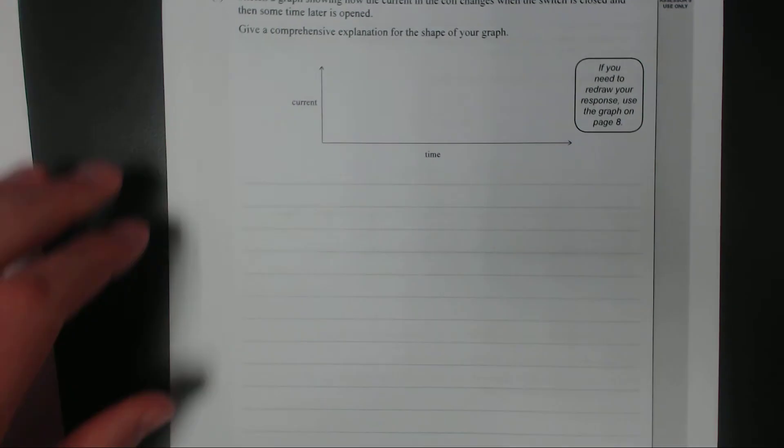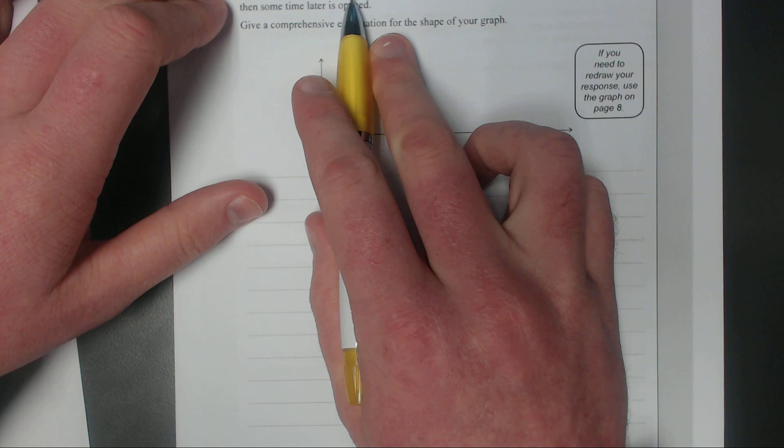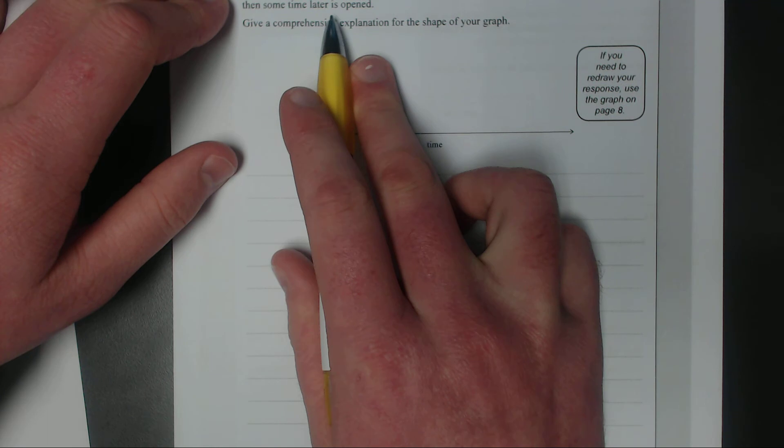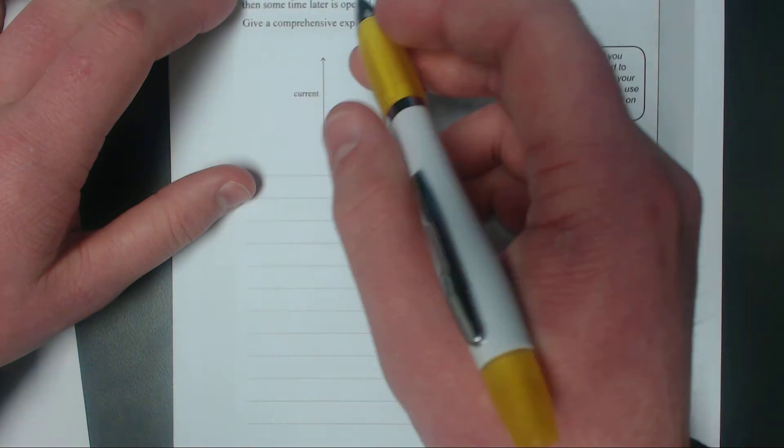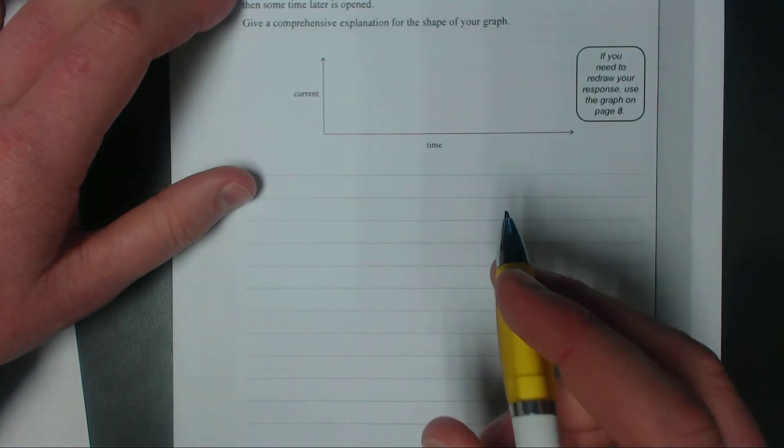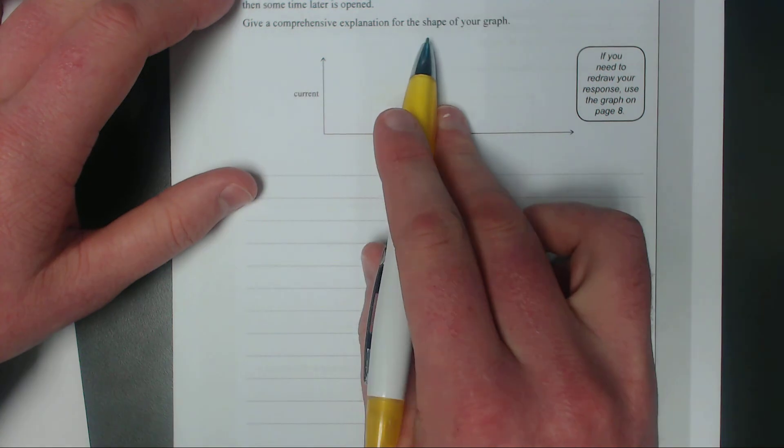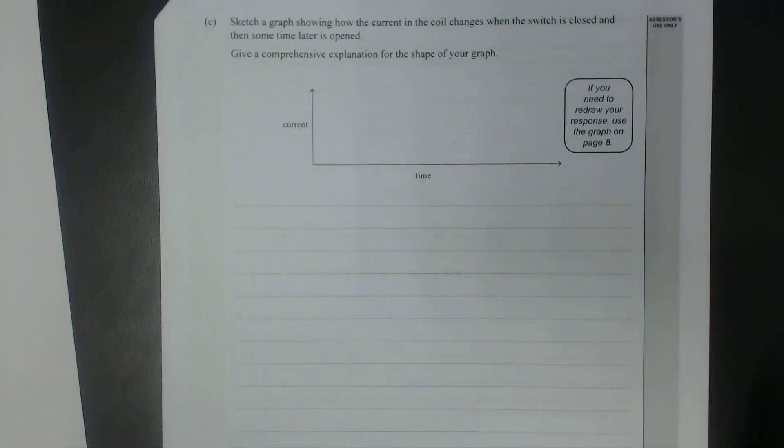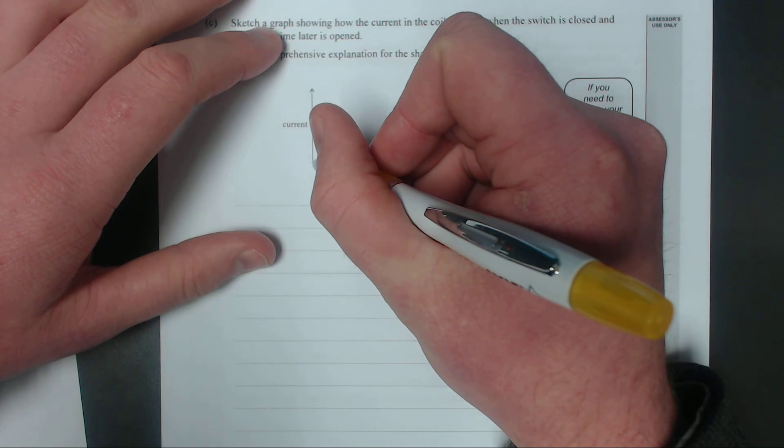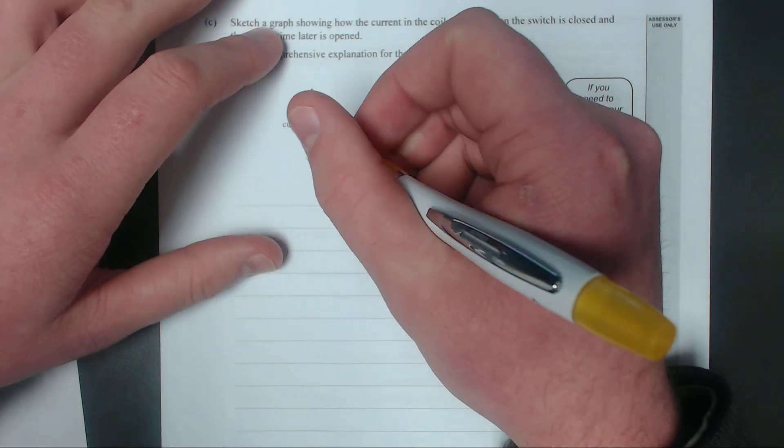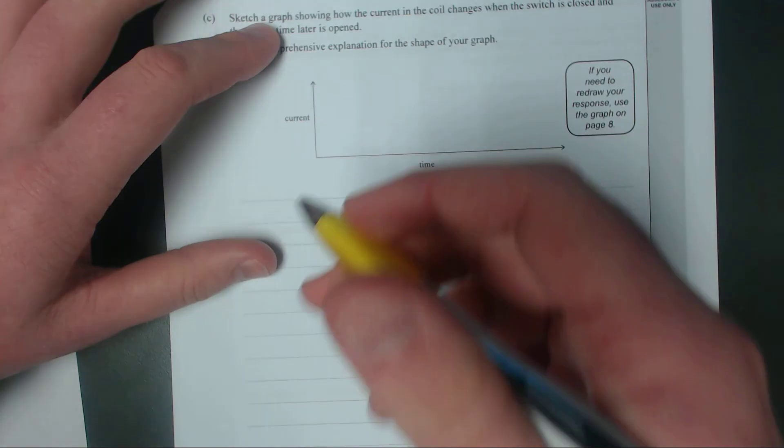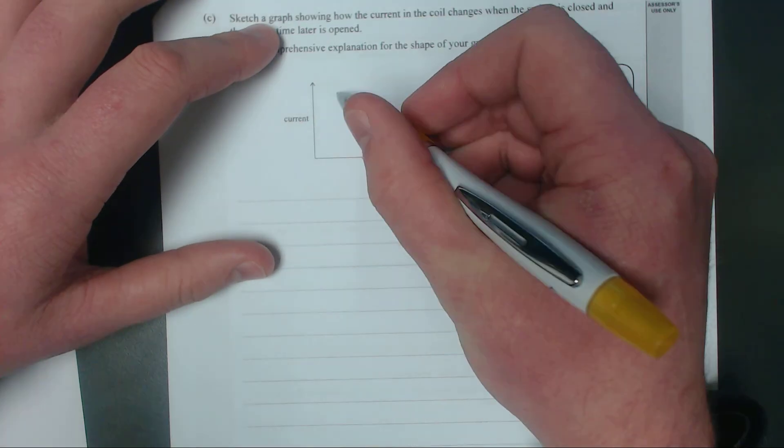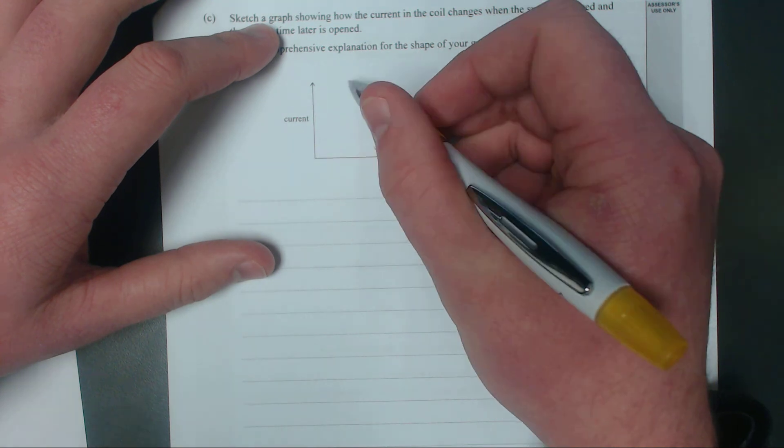Right, next question. Sketch a graph showing how the current in the coil changes when the switch is closed and then some time later when it's opened. Give a comprehensive explanation for the shape of your graph. We'll just draw the graph straight off the bat. So initially the current when you flip the switch is going to go, well if there was just a wire it would just go straight up with time.